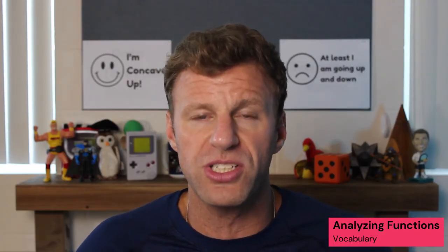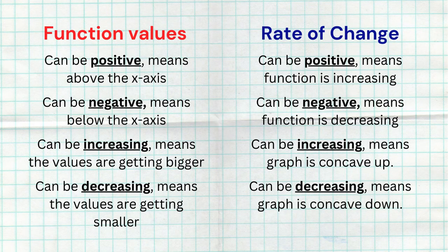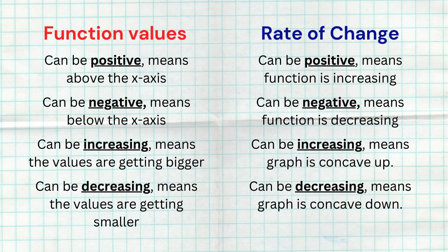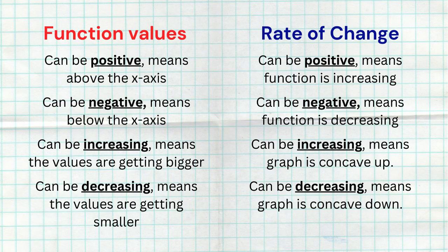The idea here is that we can analyze function values — F of X, Y's, outputs — and we can also analyze rates of change. When we analyze these two different things, we use the same four words: positive, negative, increasing, decreasing. So you've got to make sure when I say positive, what am I talking about? If I'm talking about function values being positive, I mean the function is greater than zero, above the x-axis. If I talk about rates of change that are positive, I mean it's increasing through that point. When function values are negative, it means I'm below the x-axis; when rates of change are negative, it means the function value itself is decreasing. When function values are increasing, it means the graph is moving up from left to right; but when the rate of change is increasing, it means we're concave up because the rates of change are getting bigger. When function values are decreasing, the graph is going down from left to right, whereas when rates of change are decreasing, we're concave down.